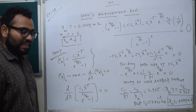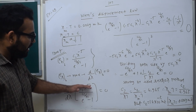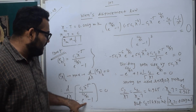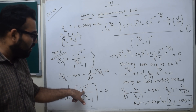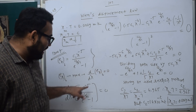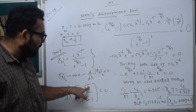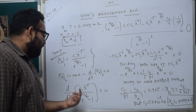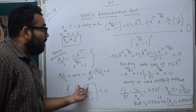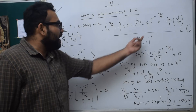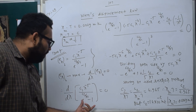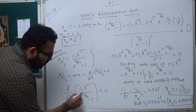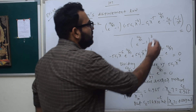So the differentiation with respect to λ equated to zero. Using the quotient rule: denominator as it is — that is e raised to C2 upon λT minus 1 — then the numerator differentiation: C1 as it is, λ raised to minus 5, then minus 5 as it is. Then denominator differentiation: e raised to C2 upon λT minus 1. Then e raised to C2 upon λT as it is.